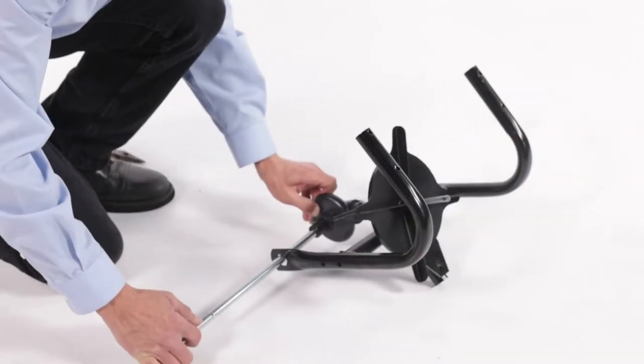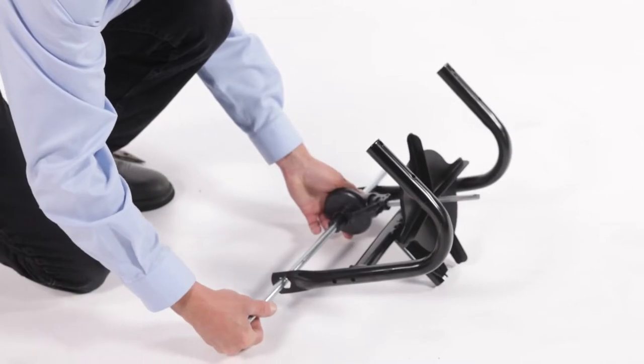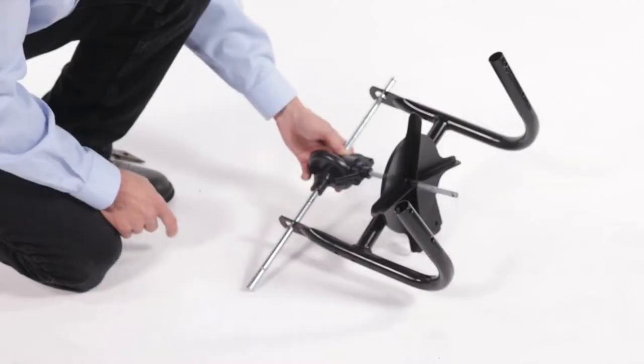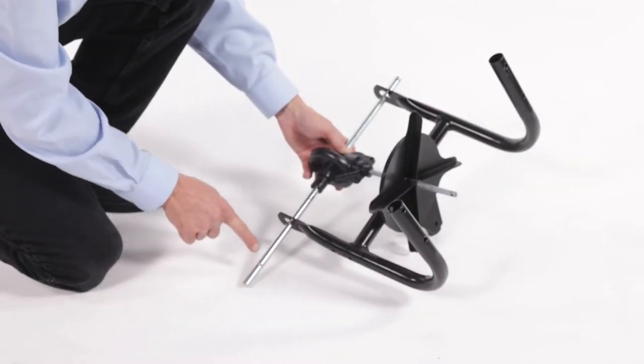Next, align the axle, Part X, with the frame, Part S, and gearbox assembly, Part W. Ensure it's aligned as shown.